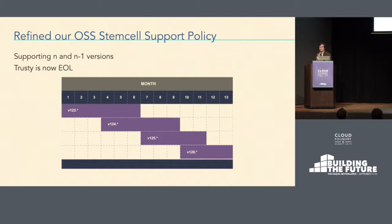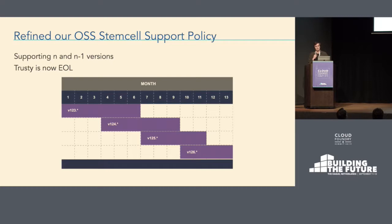Another thing we wanted to tackle this year was actually defining what our stem cell support policy is. In the past it's been kind of nebulous — if you asked people on the Slack channel we might say we support the latest version. Now we actually say we support n and n-1 on any given stem cell line, which is currently Xenial and I believe there is a CentOS stem cell line but I don't know how much longer that'll be around. It's now official that we have end-of-life Trusty support, so hopefully everyone's on those Xenial stem cells. You can always expect to get security and patch updates for any of the supported stem cell lines.